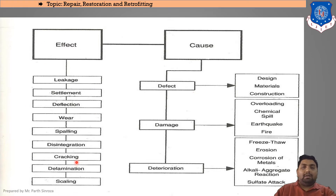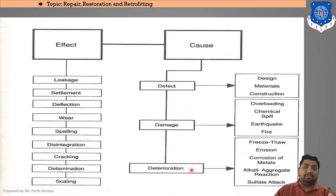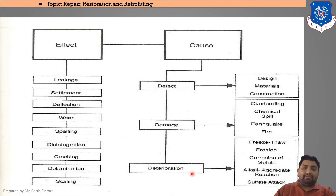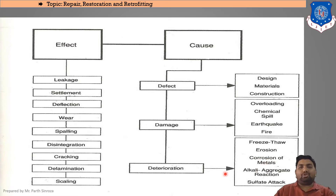Deterioration includes freeze-thaw, erosion, corrosion of metals, alkali-aggregate reaction, and sulfate attack. These effects increase with time — in the first five years they may not be visible, but during the later portion of the design life they can be seen on any structure.